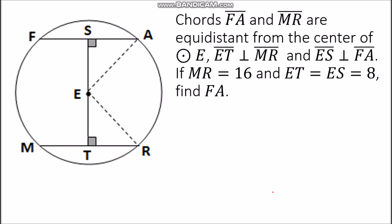Let's work through an example. In circle E, chords FA and MR are equidistant from the center. Segment ET is perpendicular to MR and segment ES is perpendicular to FA. If MR is 16 and ET and ES are both equal to 8, find FA. Since ES and ET have the same distance of 8, the chords are equidistant.